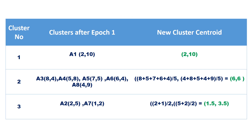Based on the current cluster membership, recalculate the cluster centroids by taking the mean of the x-values and y-values of each cluster's members. Since cluster 1 has only A1, its centroid remains (2, 10). The centroid of cluster 2 is ((8+5+7+6+4)/5, (4+8+5+4+9)/5) = (6, 6). The centroid of cluster 3 is ((2+1)/2, (5+2)/2) = (1.5, 3.5).